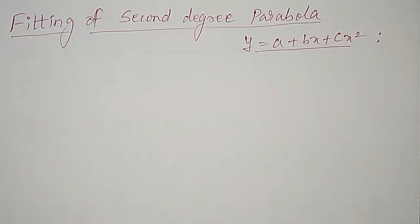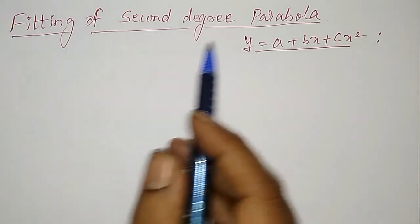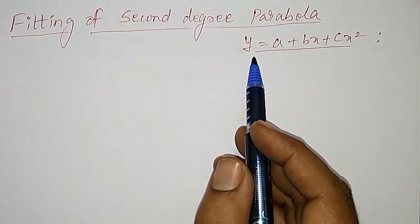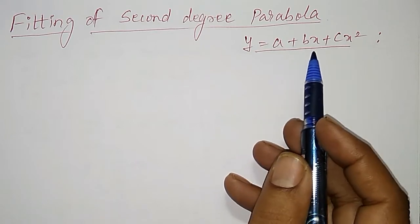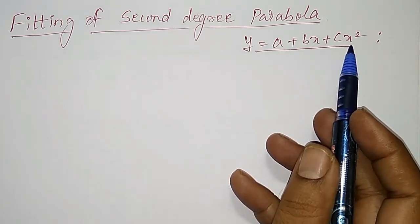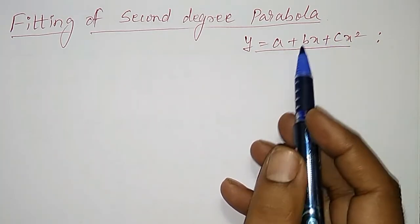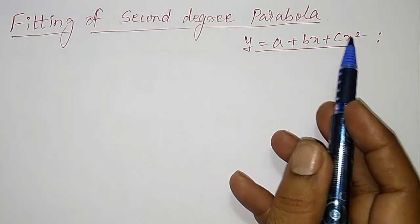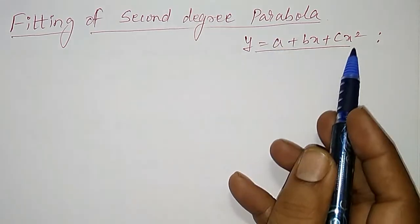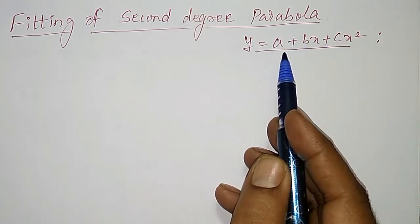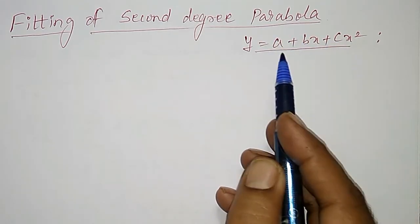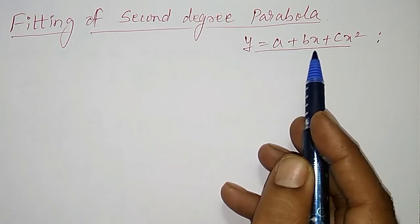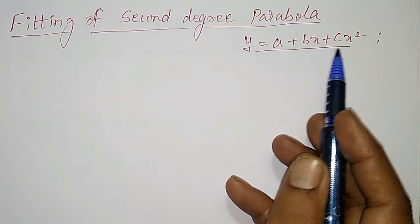In this video, I am going to derive the normal equations for fitting a second degree parabola y equal to a plus bx plus cx square. Any second degree polynomial is called as a parabola, and the general equation is a plus bx plus cx square, or it may be ax square plus bx plus c also.